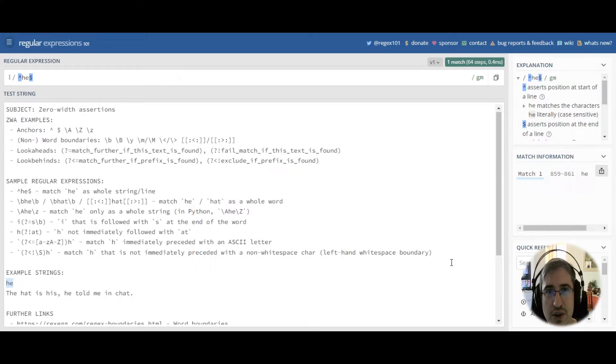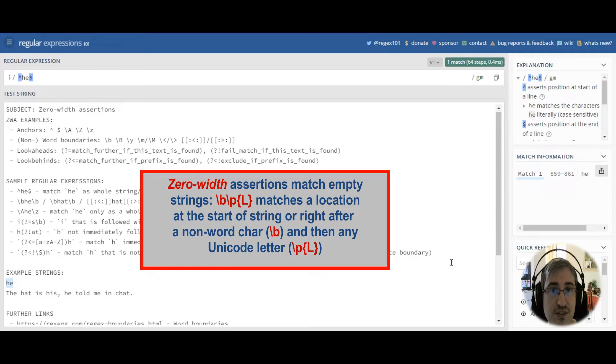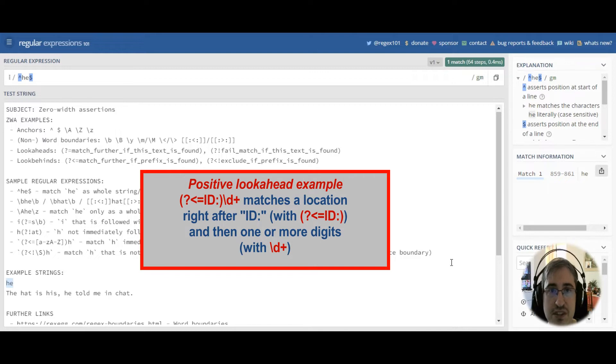Why are they called zero-width assertions? Such constructs can match empty strings. Why are they assertions? They assert or require the presence or absence of some specific characters either on the right or on the left of the current location.